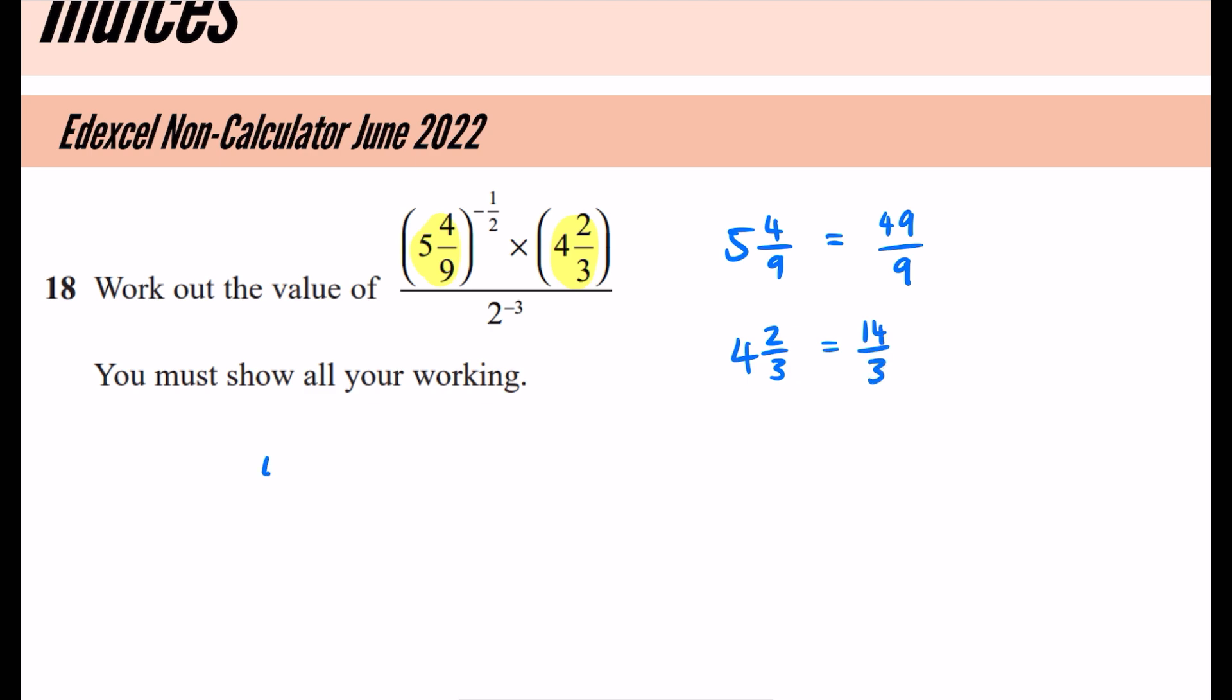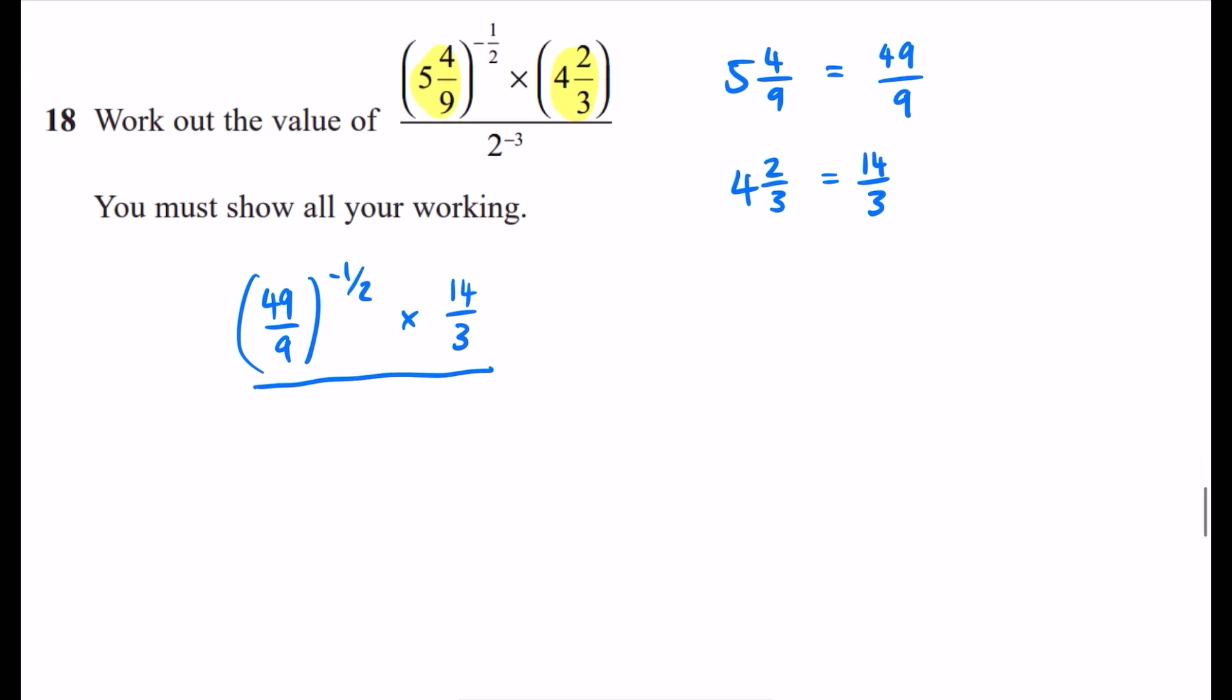So I'm going to rewrite this, and we then have 49 over 9 to the power of minus a half, multiplied by 4 and 2 thirds, which we've just said is 14 thirds. And then the part that we've got on the bottom is 2 to the power of minus 3.